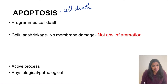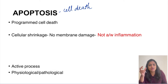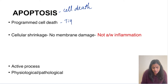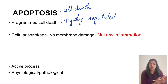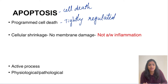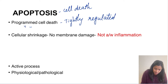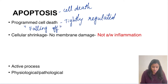Apoptosis is a programmed cell death. What do I mean by the word 'programmed'? It means that it is tightly regulated by a certain set of genes. It doesn't happen randomly like necrosis. It has set pathways under which apoptosis happens, and these are controlled by genes. The literal meaning of apoptosis is 'falling off.'